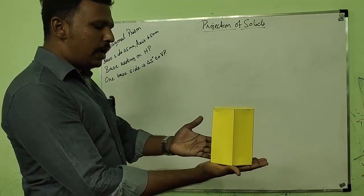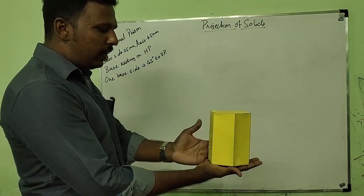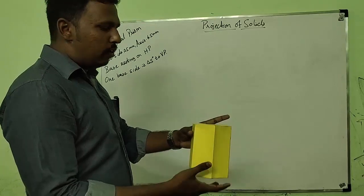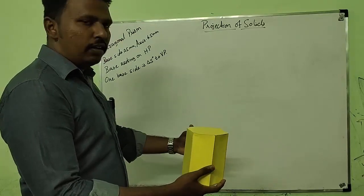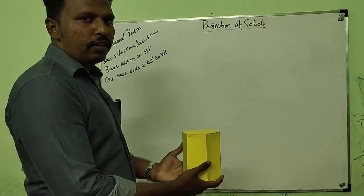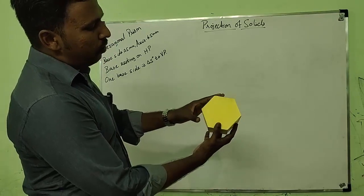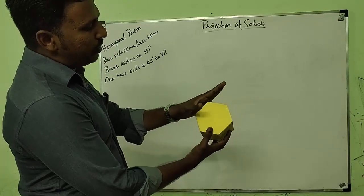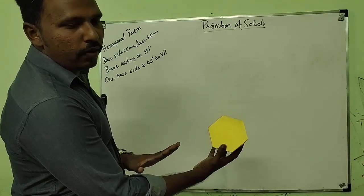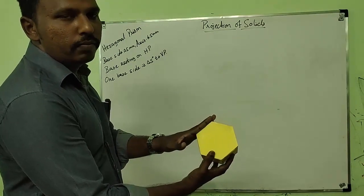One of its base sides is inclined at 45 degrees to VP — it is not parallel to VP. So when you view from the top, one of its base sides is inclined at 45 degrees to VP, and we have to draw that condition in the top view.